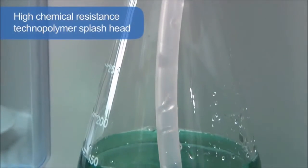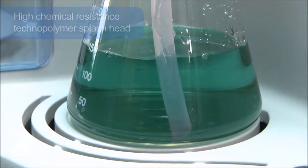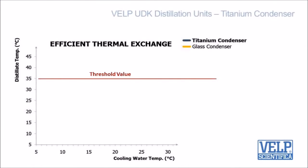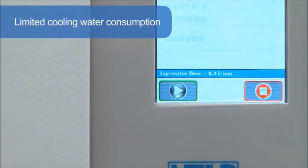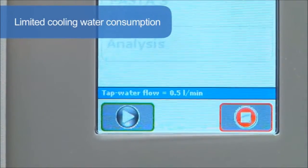The high-chemical resistance technopolymer splash head is the most resistant solution available. Another exclusive key component is the titanium condenser, one more patented solution. It guarantees that the distillate temperature always remains below the threshold value for total nitrogen recovery. In addition, the cooling water consumption is really low, starting from only 0.5 litres per minute.